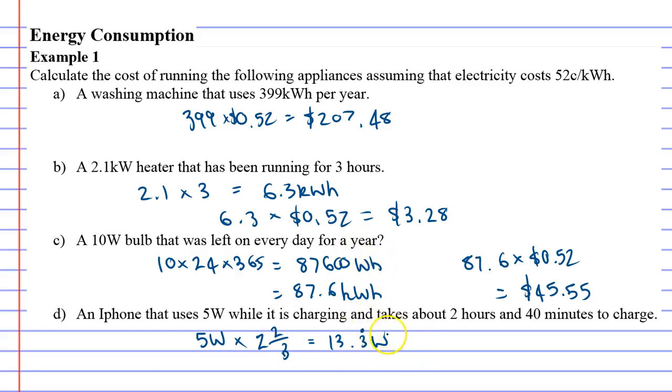That's remembering that watt hours, because we've incorporated time. Now it needs to be in kilowatt hours, which means we're going to divide by 1000. So it's really 0.013 continuous kilowatt hours.